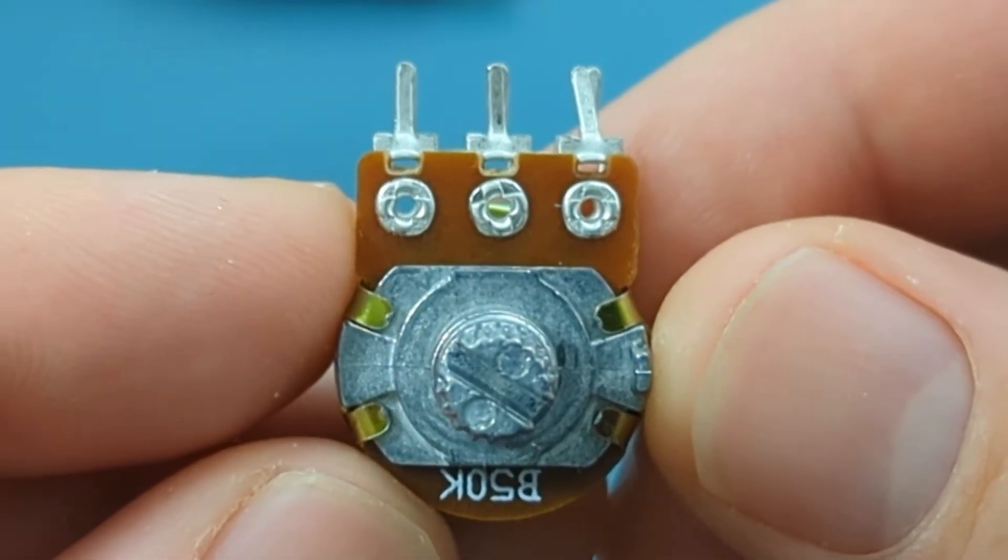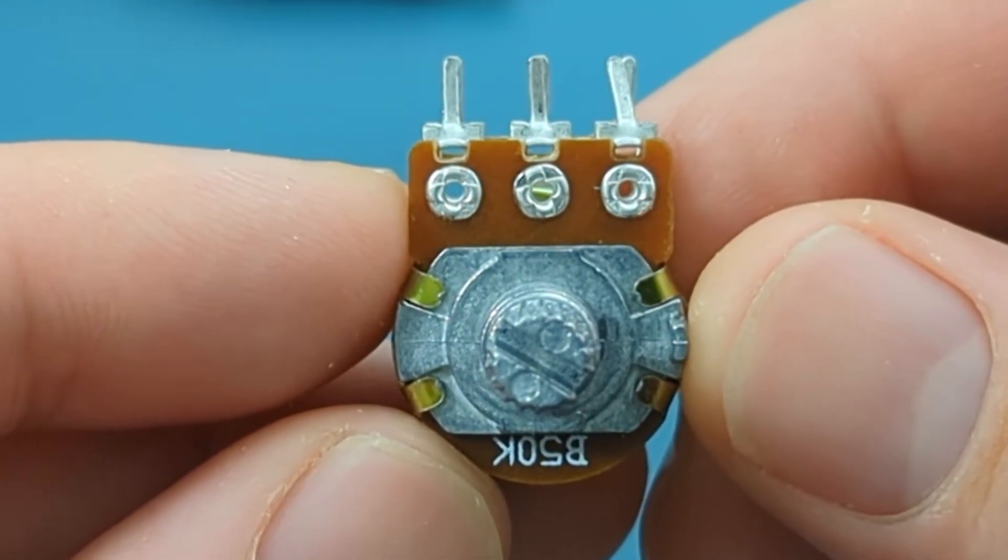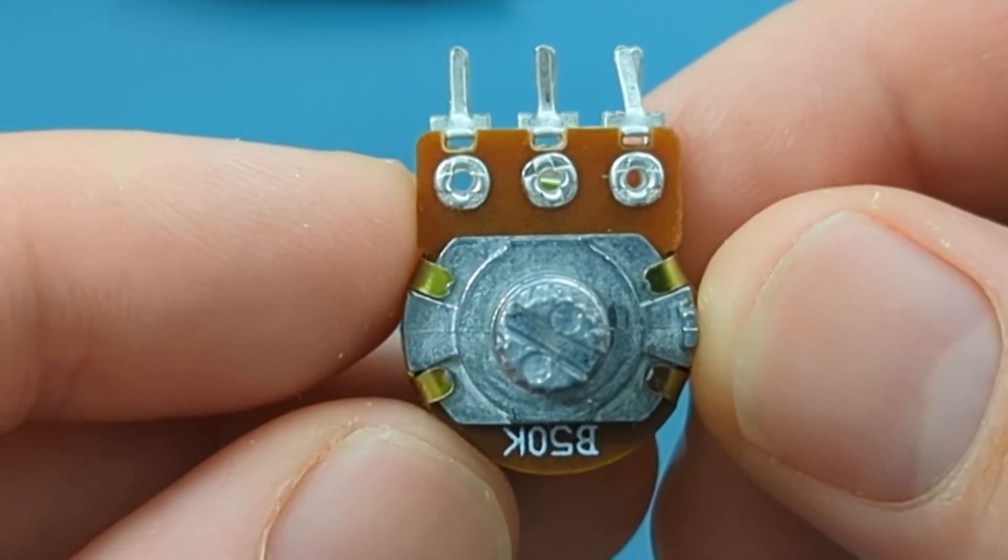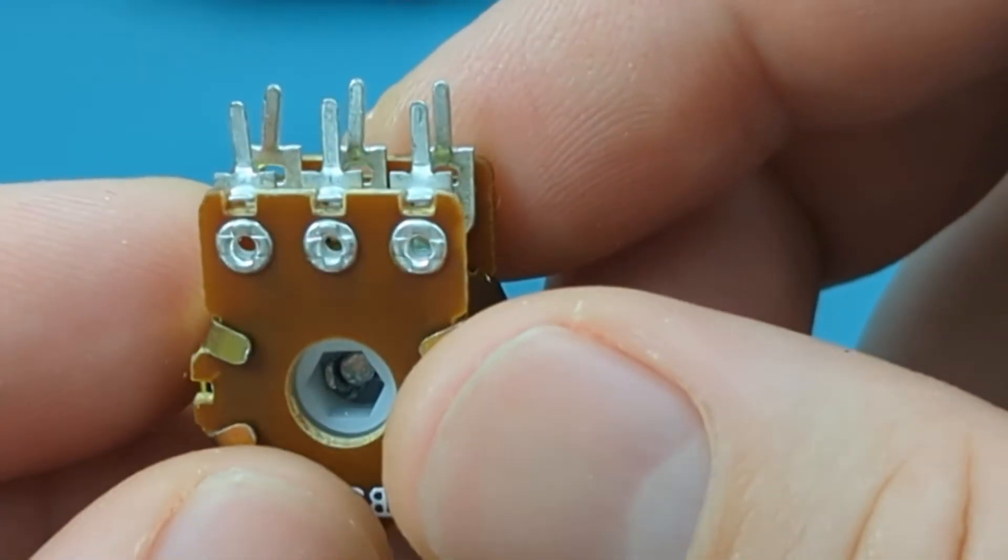This potentiometer has six pins. It works the same way as the three pins. It's basically two potentiometers. This is used for stereo volume control when you want the left and right channels of the audio to move in unison.